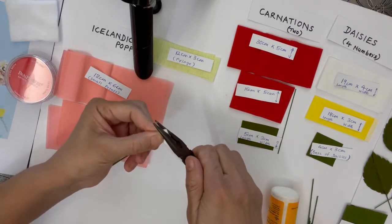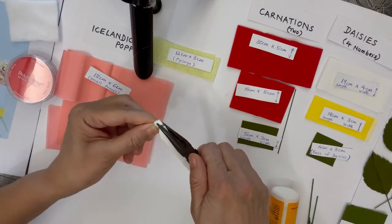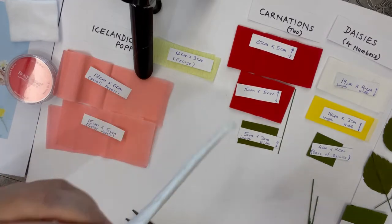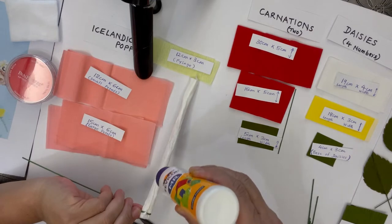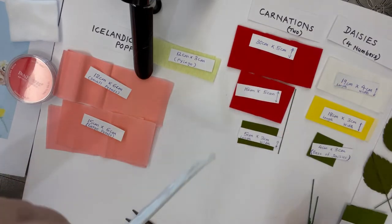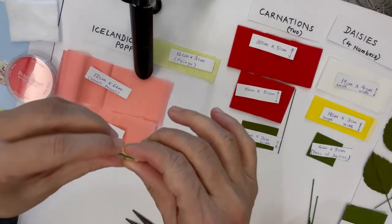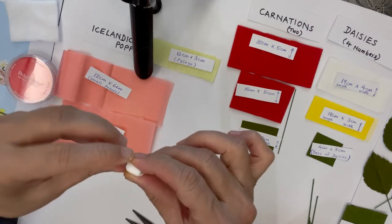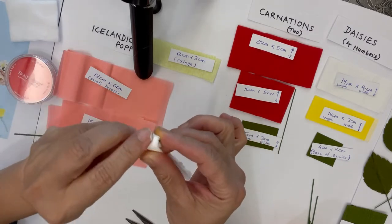Once that's done, I can start gluing the whole strip around the floral wire.